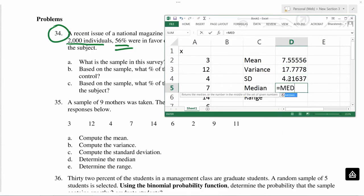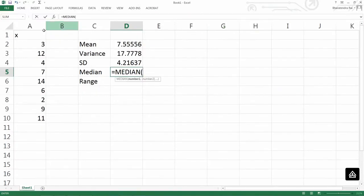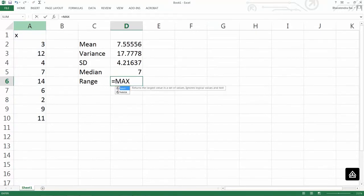Median, so median, and then you select this column. Select this column, close the bracket to get the median. Range equals max of this data set minus minimum of this data. So this gives you all the five summaries.